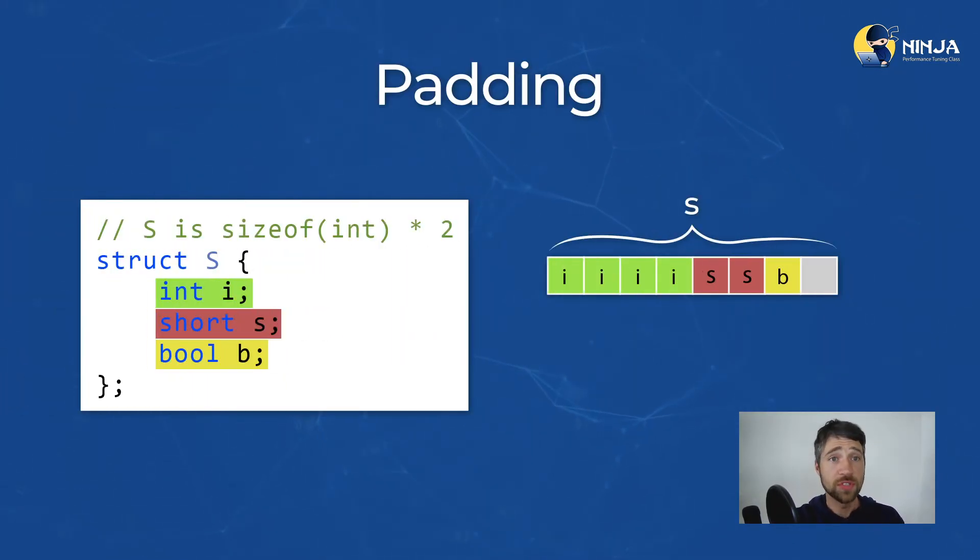By rearranging the fields of struct S, we can eliminate the need for the compiler to pad our data structure. After this change, the size of the struct is reduced by 4 bytes, from 12 bytes to only 8 bytes.